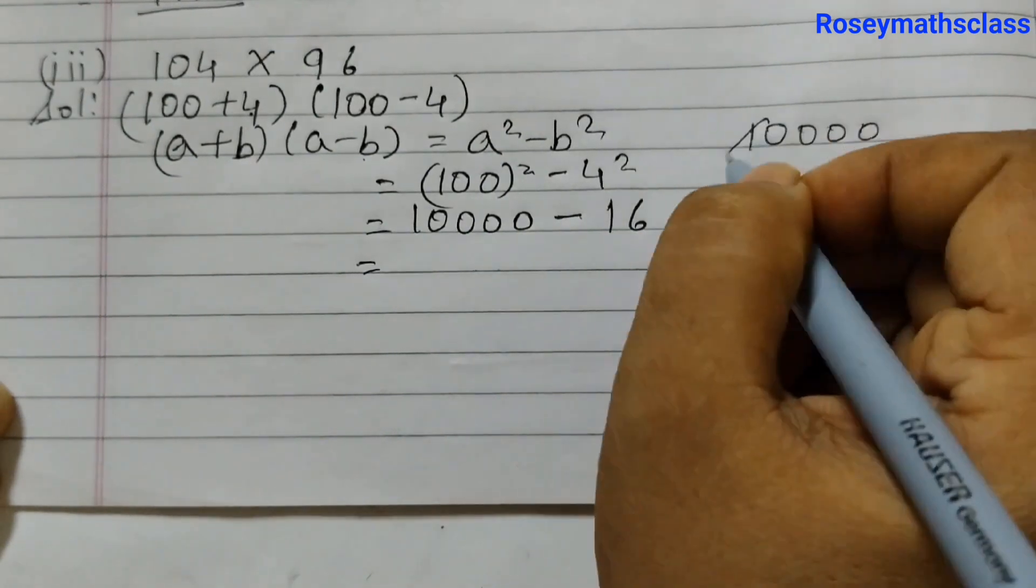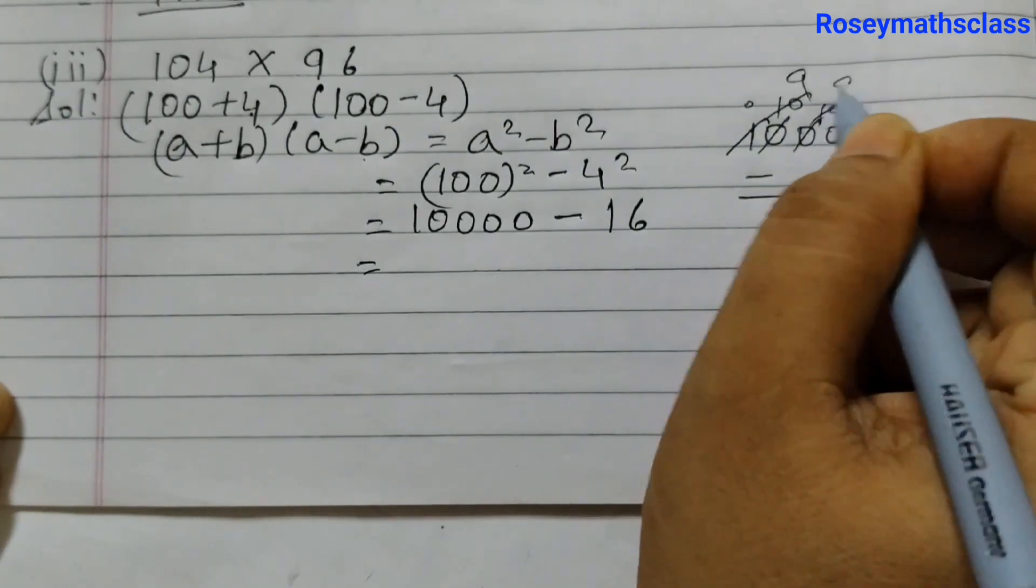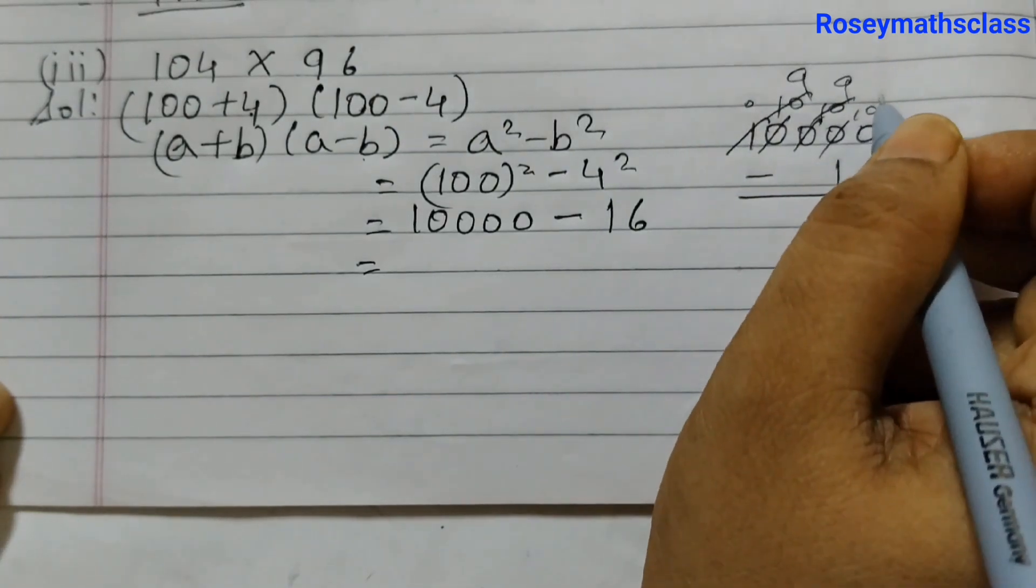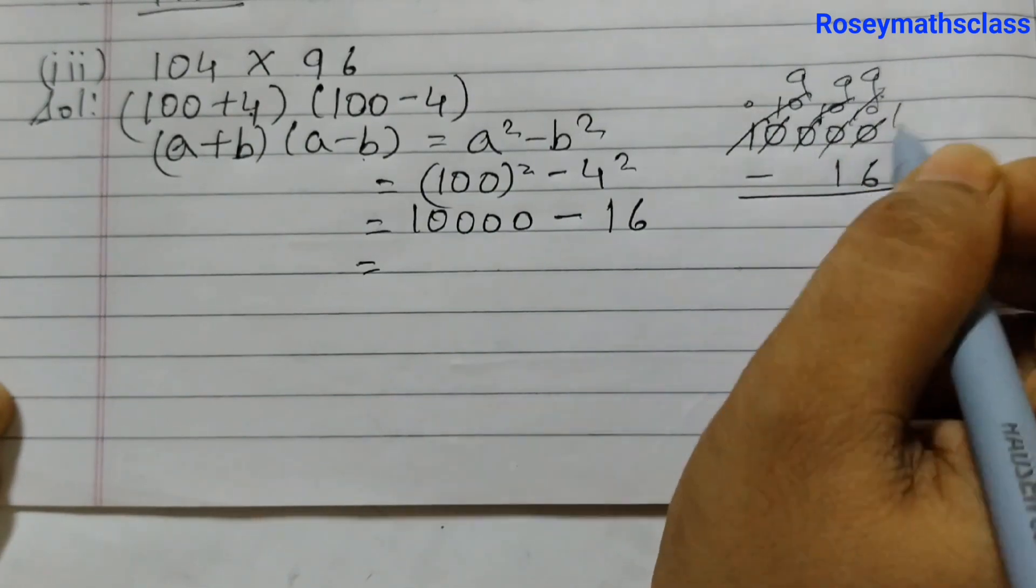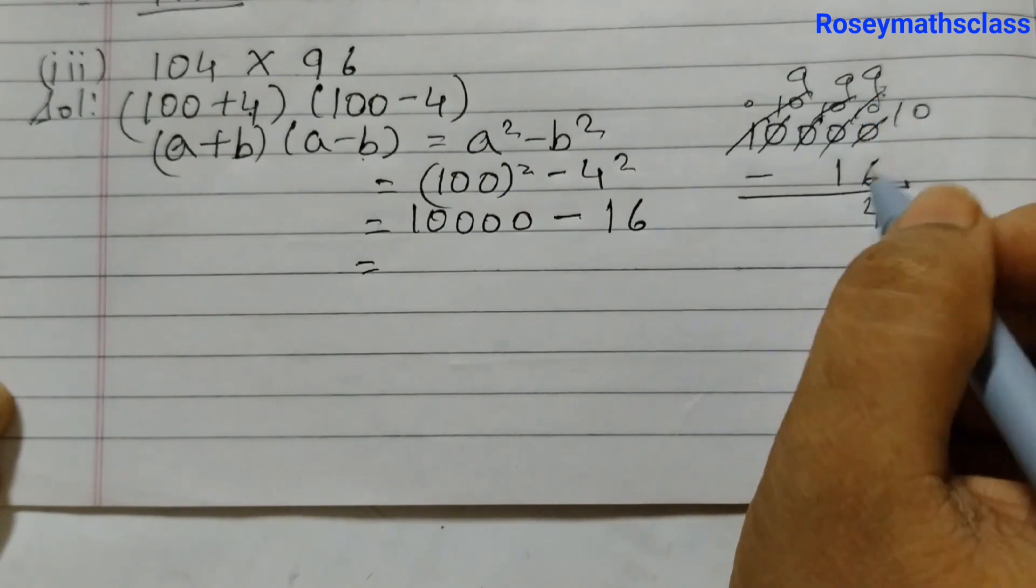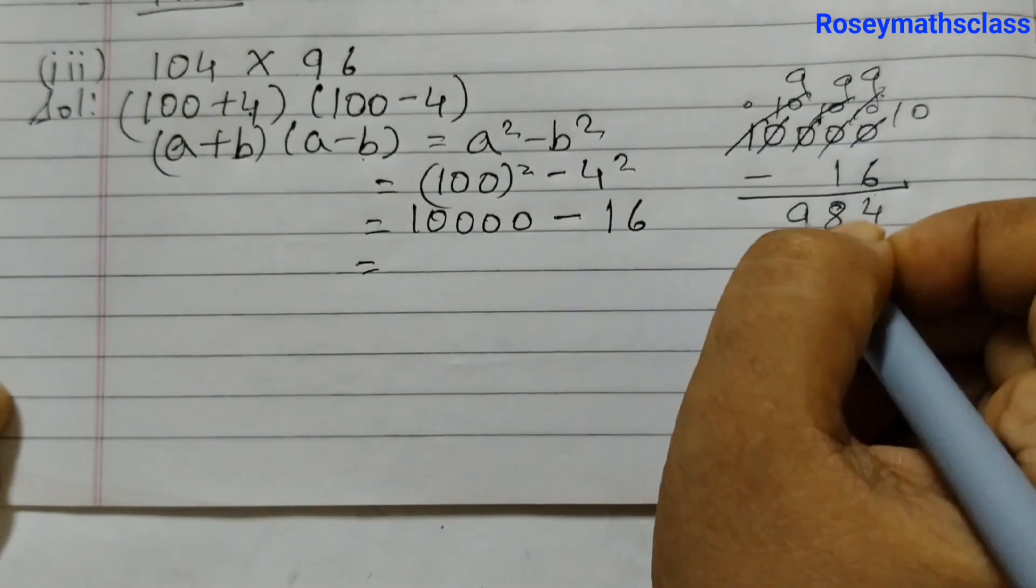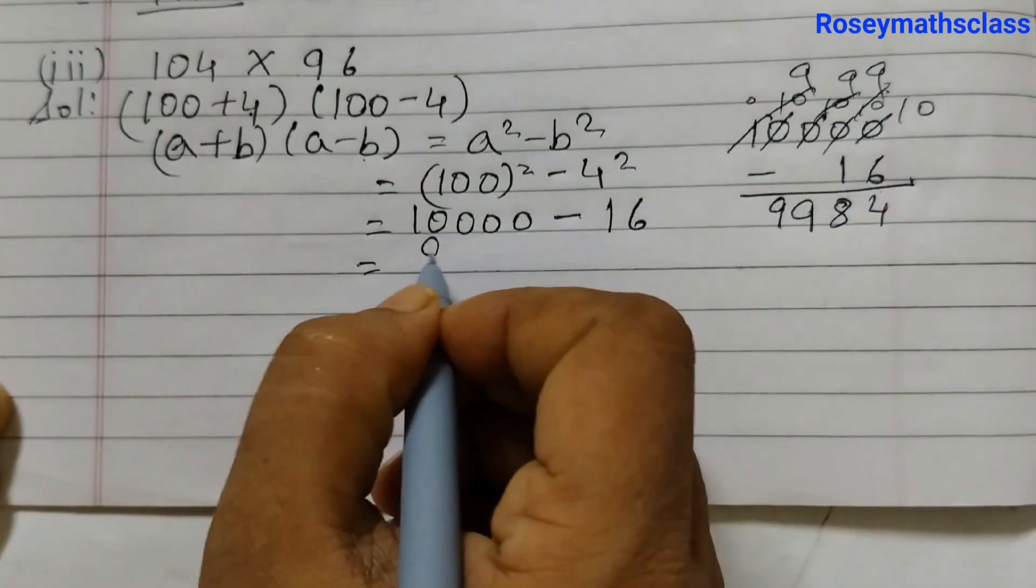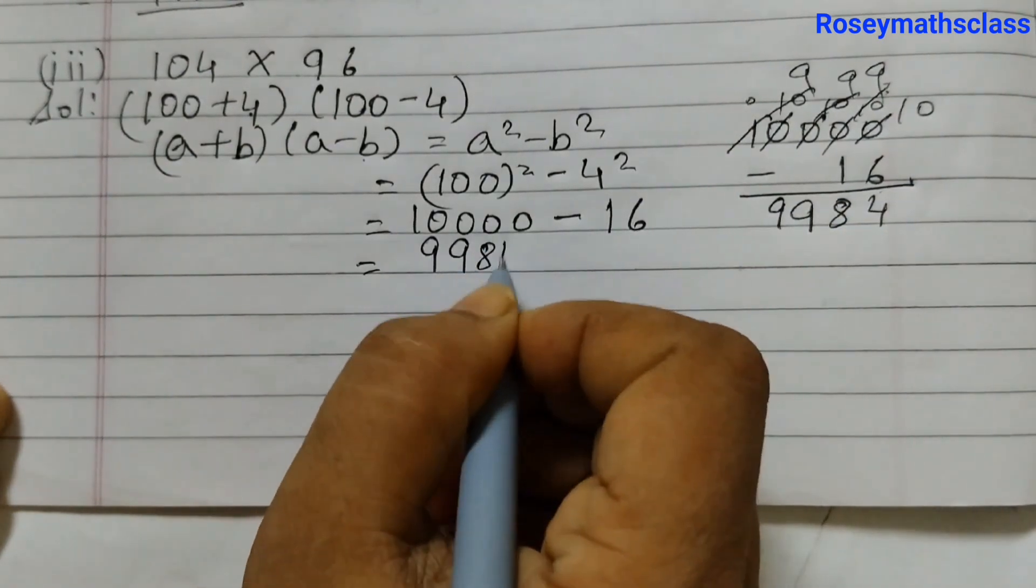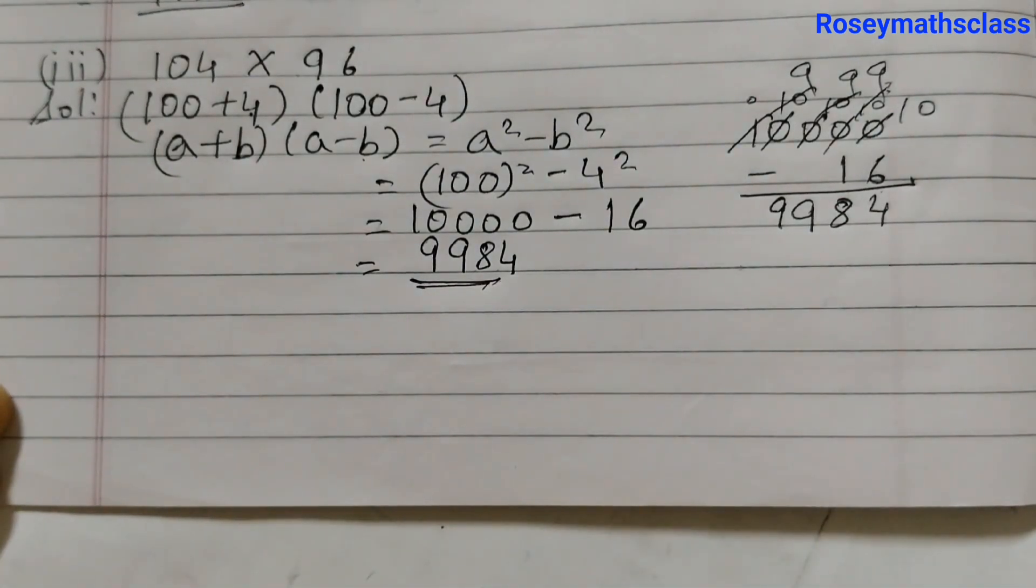Now subtract 10,000 minus 16. 0 minus 6 we cannot do, so we need to borrow. This becomes 0, 10, borrow from here, this will become 9 and this will become 10. So 10 minus 6 is 4, 9 minus 1 is 8. 9,984, and that's the answer for the third one.